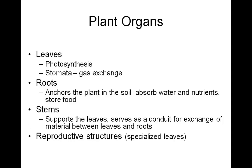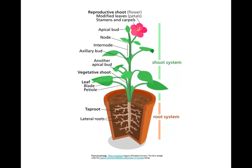In angiosperms, these modified leaves are the parts of the flower. In this diagram of a plant, the above-ground portion is the shoot system made up of the stem, leaves, and flowers. The below-ground portion is the root system — here you see a taproot and lateral roots growing from the central taproot.